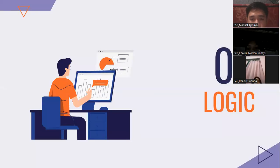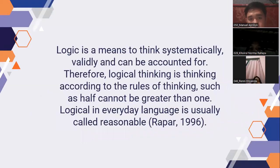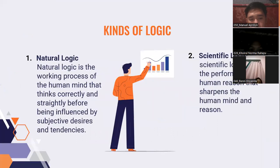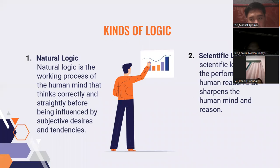The next point is logic. Logic is meant to think systematically, validly, and in a way that can be accounted for. Therefore, logical thinking is thinking according to the rules of thinking. Logic in everyday language is usually called reasonable. Types of logic: number one, natural logic — natural logic is the working process of the human mind that thinks correctly and strictly before subjective desires and tendencies influence it. Number two, scientific logic — scientific logic is the performance of human reason that is sharpened in the human mind and reason.